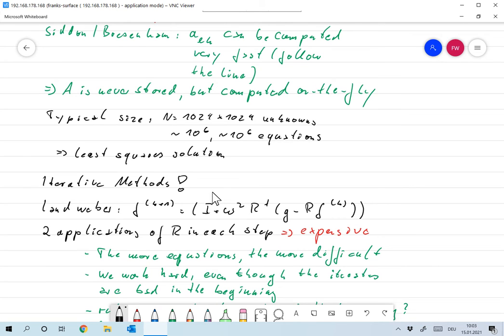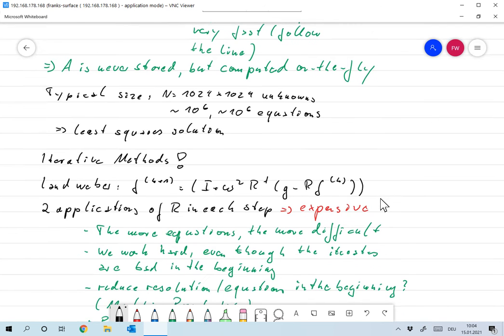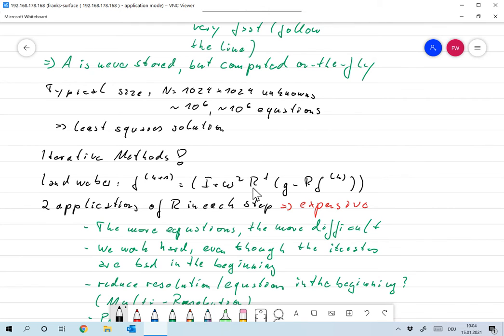What immediately comes into mind is something that we already looked at: it would be Landweber, defined by f_k+1 is I plus omega squared R transpose times (g minus R f_k). We've analyzed this, we've looked at convergence properties, so everything's nice. Provided omega squared is small enough, then this is going to work. The problem with this is that we have two applications of R in each single step, and that's very expensive. Think of the fact that even though the matrix is sparse, it still has a matrix size of 10 to the 6 by 10 to the 6, so just applying R once or the adjoint of R is going to be extremely expensive.